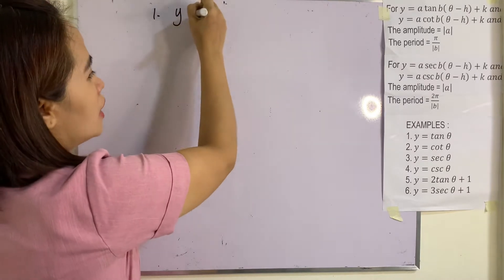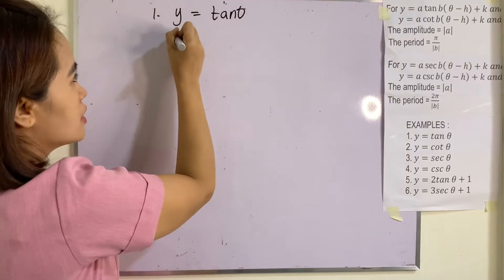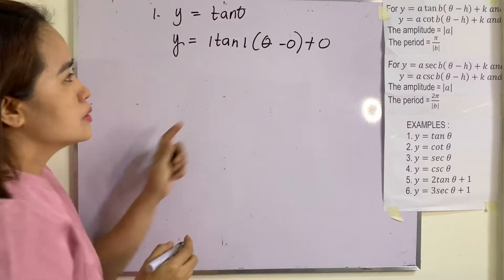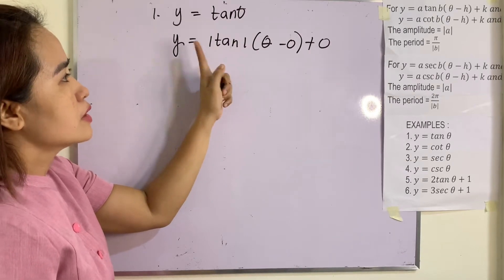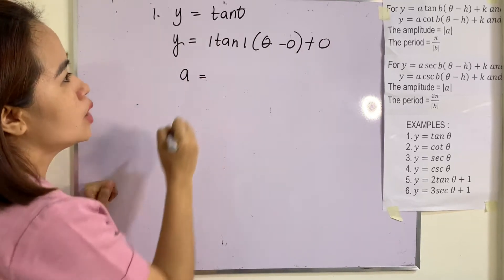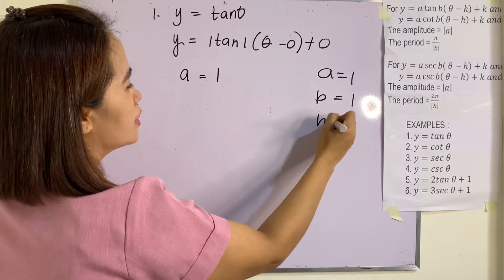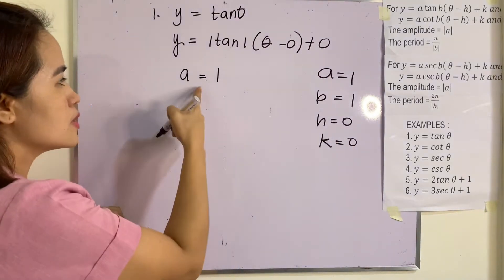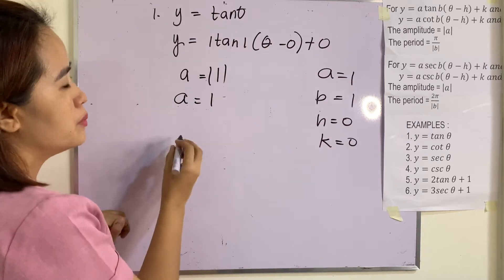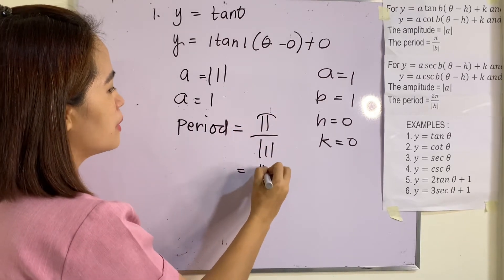Example 1: y = tan(θ). We can write this as y = 1·tan(1·(θ − 0)) + 0. So a = 1, b = 1, h = 0, k = 0. The amplitude is |a| = |1| = 1. The period is π/|b| = π/|1| = π.